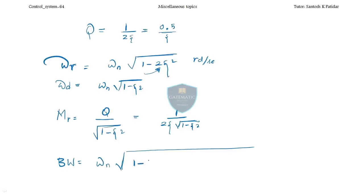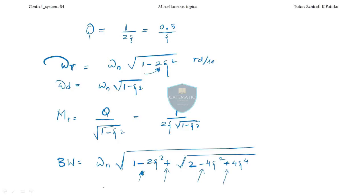The full bandwidth formula is: omega_n times the square root of (1 minus 2 zeta squared) plus the square root of (2 minus 4 zeta squared plus 4 zeta to the power 4). This is the frequency domain specification of the second order system.